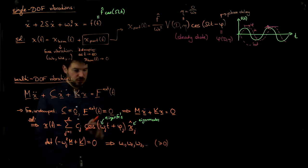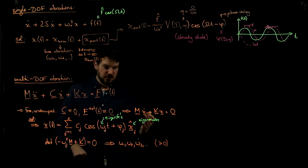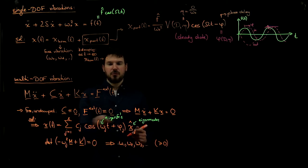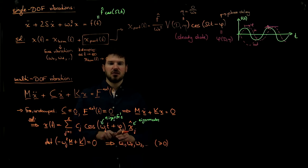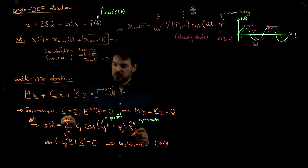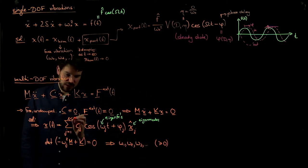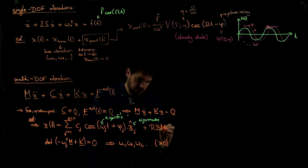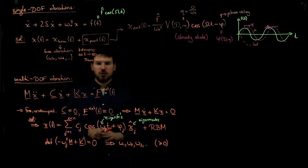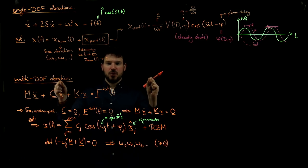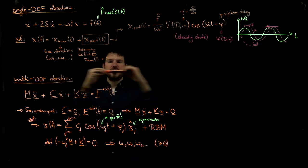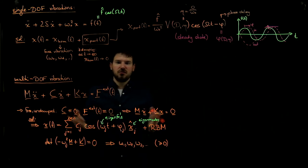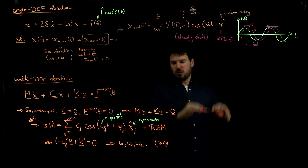Sometimes some eigenfrequencies are zero — that is a very particular case. If you plug in zero, there is no time dependence anymore, and we end up with a rigid body mode. This is not a vibration. For example, two particles connected by a spring: if they move in the same direction, the spring is never stretched, there is no potential energy involved, no forces — the system moves as a rigid body. That is what we call rigid body motion, and it is not a vibration. For all actual vibrations, we have a real non-zero eigenfrequency.